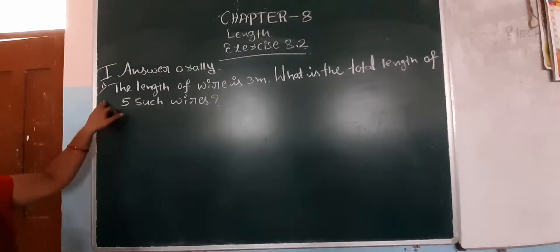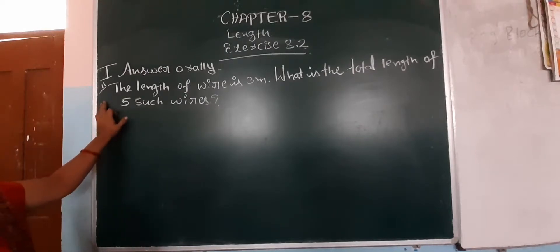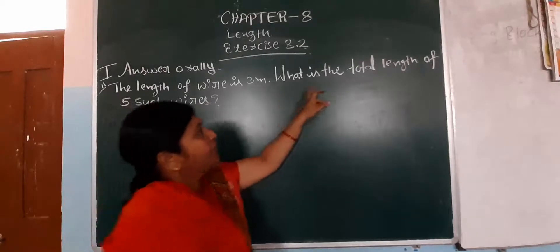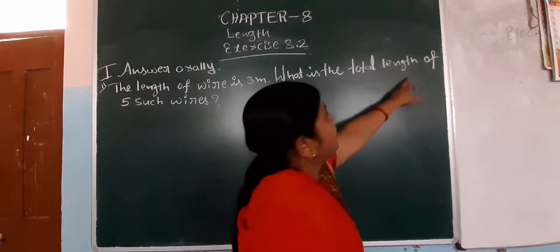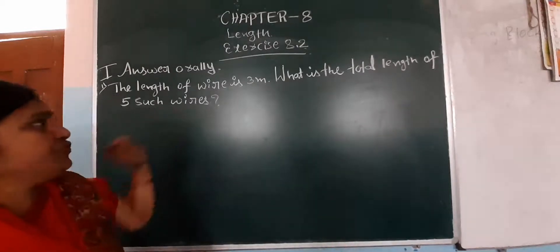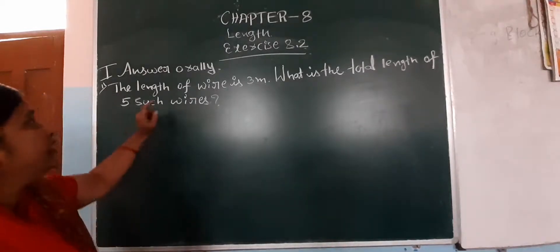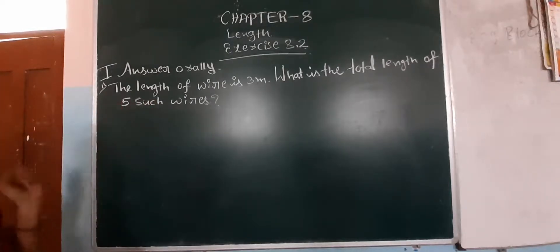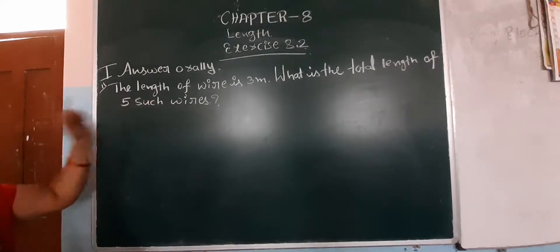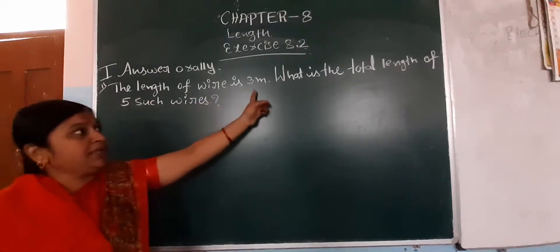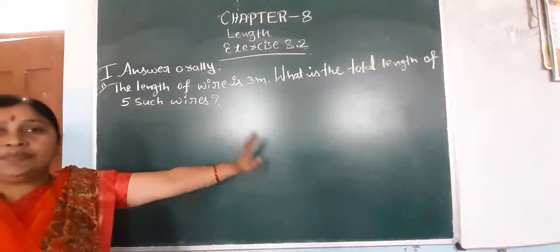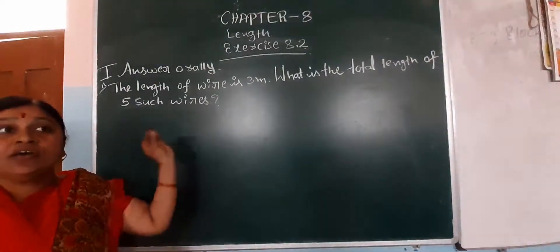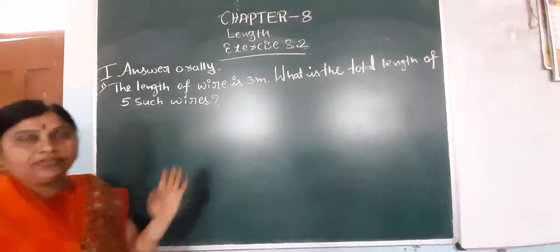First one: the given question is the length of the wire is 3 meter. What is the total length of 5 such wires? They given one wire length, that is 3 meter. That type of 5 such wires — find the total length.